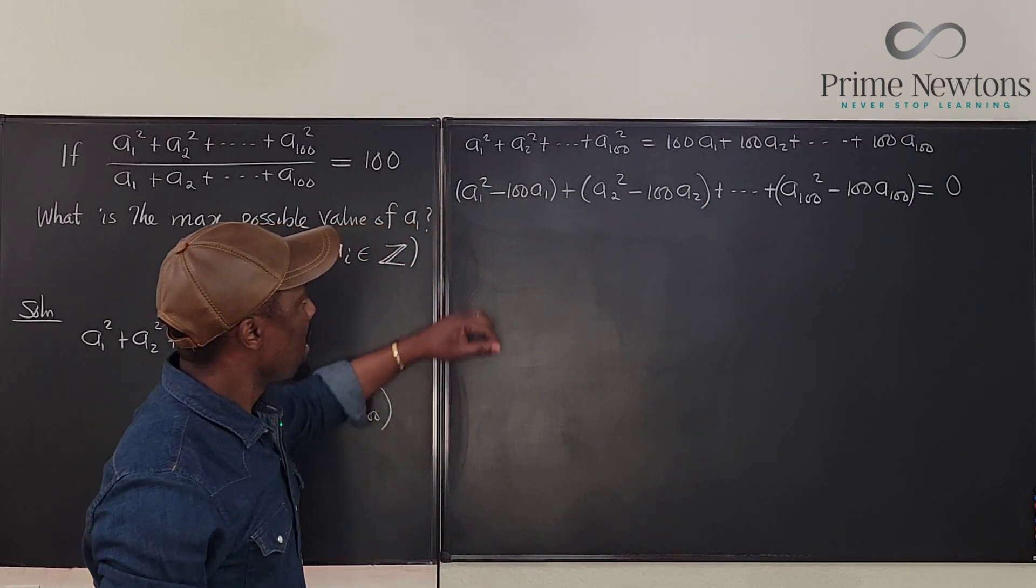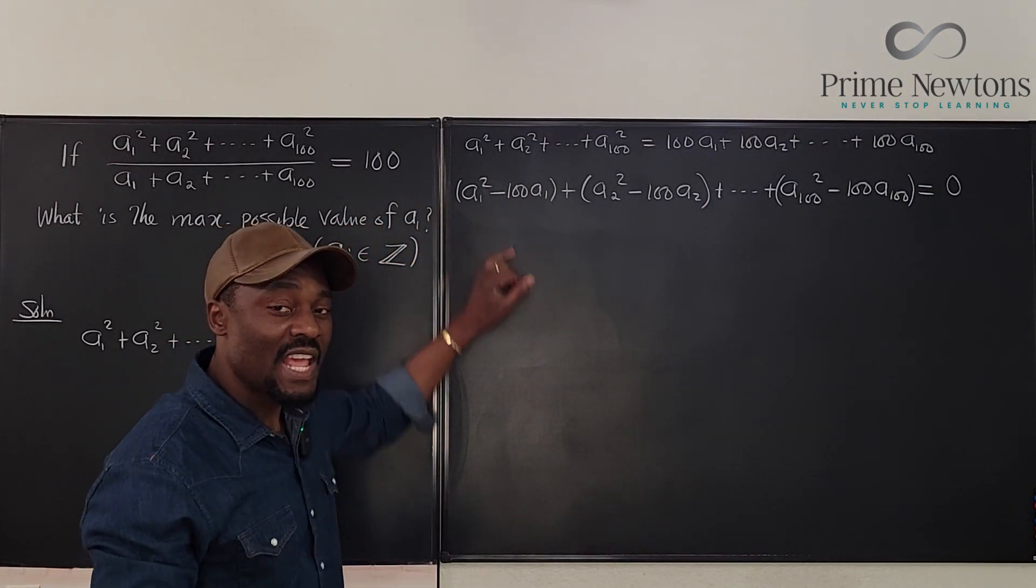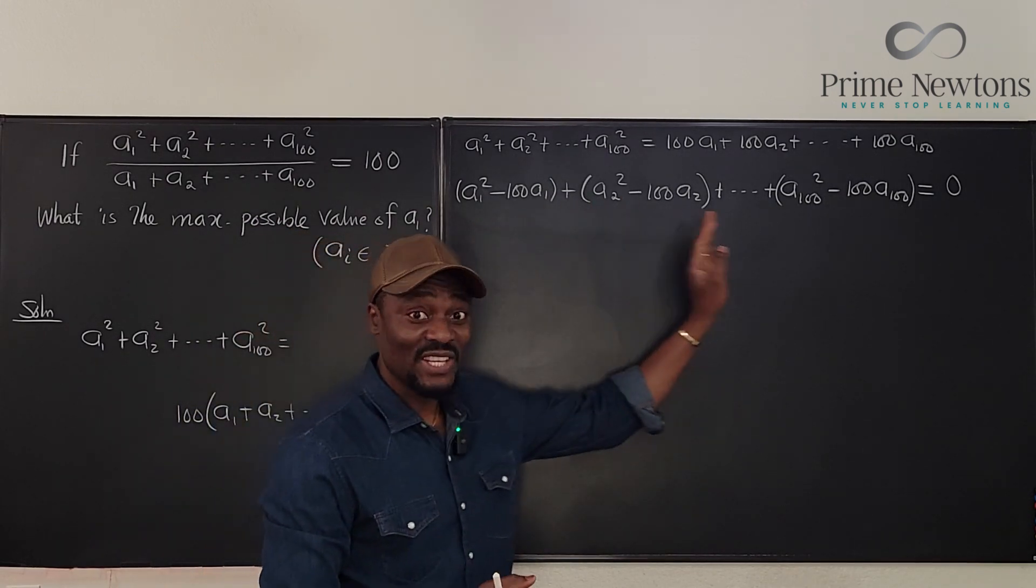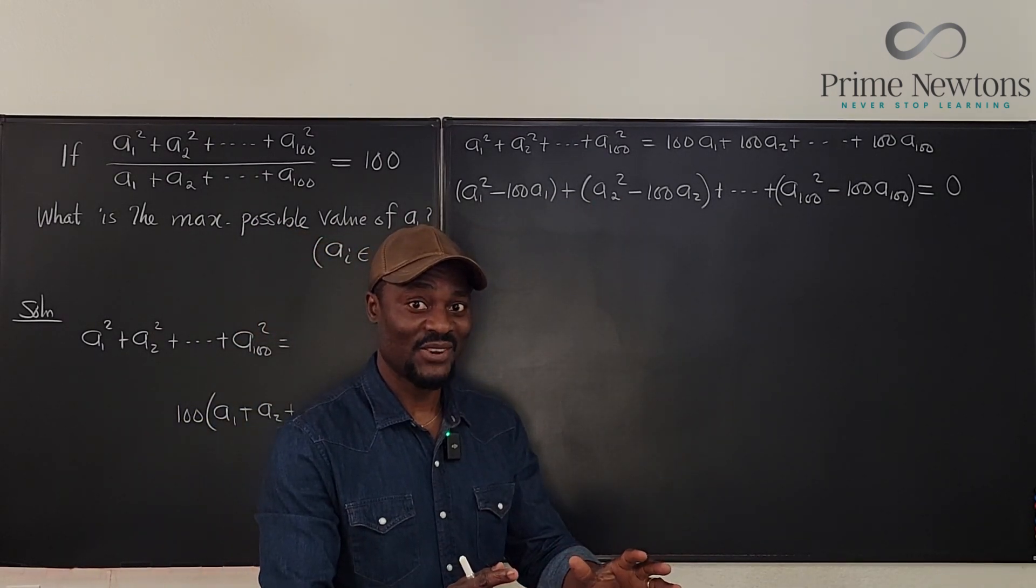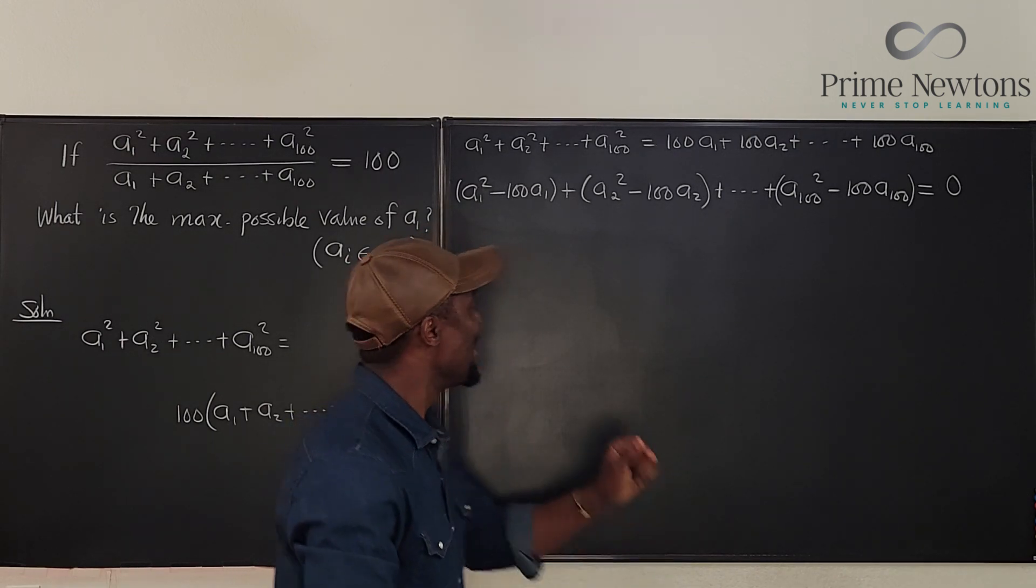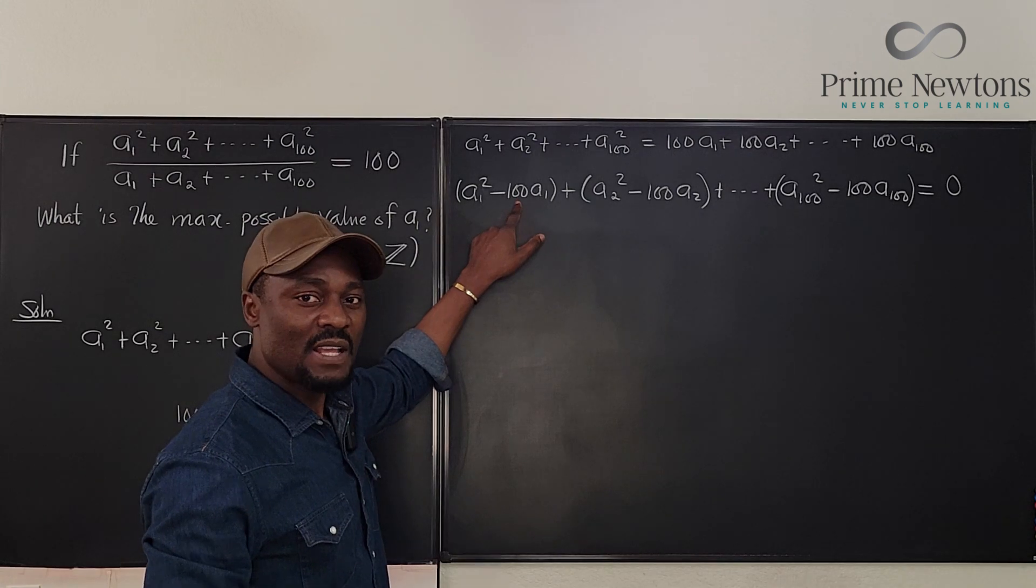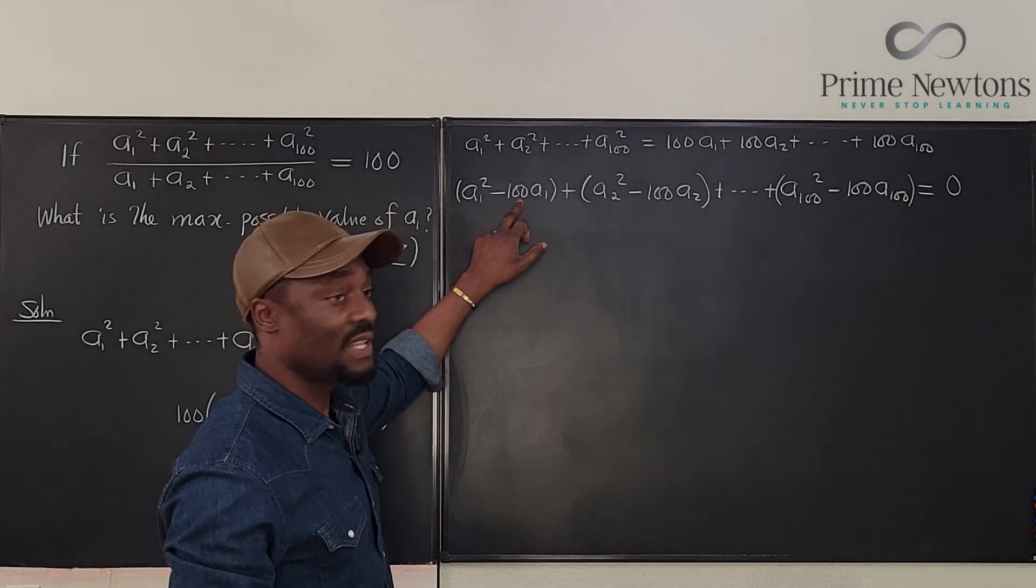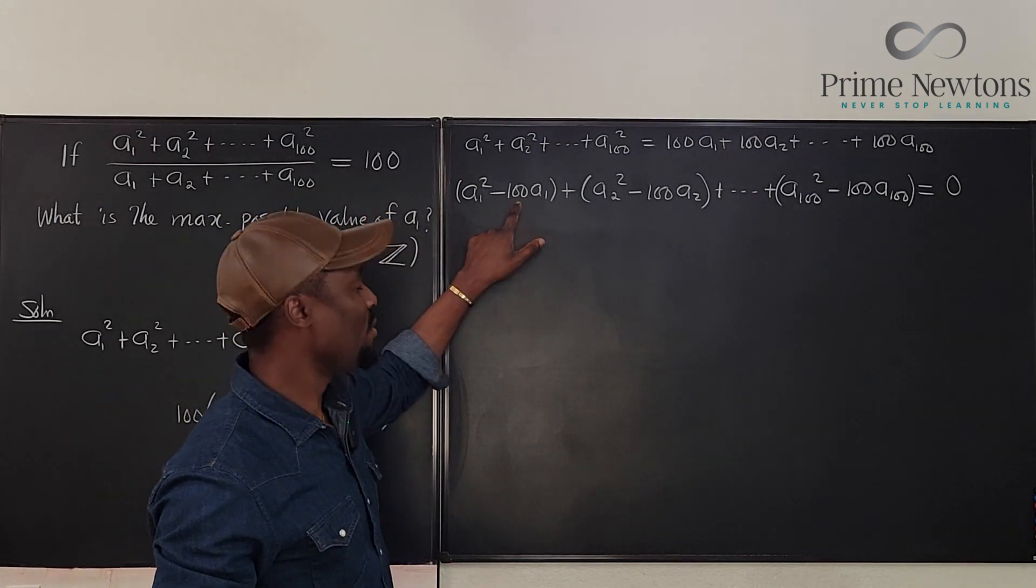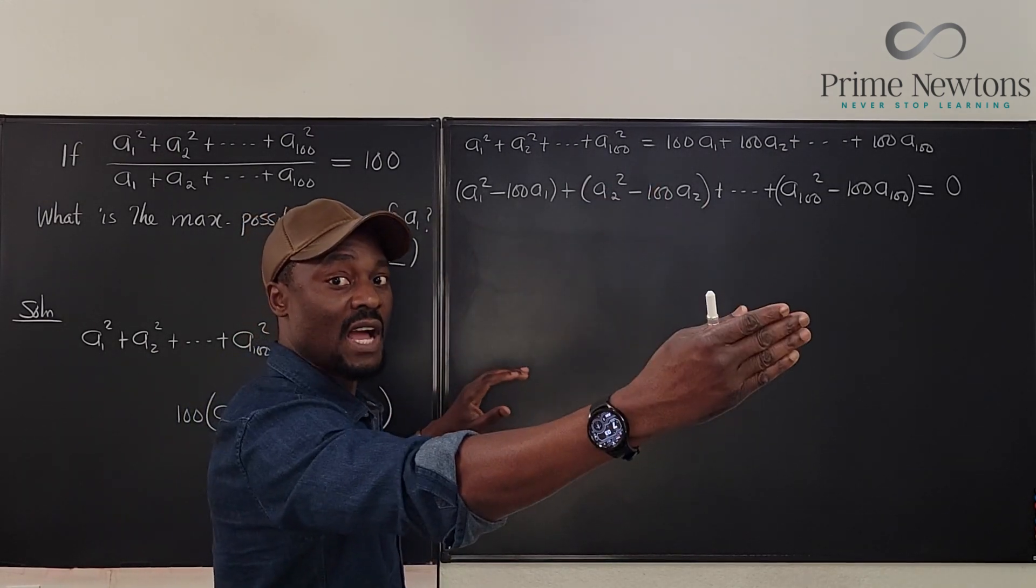Now, if I perform completing the squares on this, why am I doing it? It is to guarantee that everything I'm adding together is positive. That's the good thing about completing the squares. So if I do completing the squares here, remember, it is half of the middle term or half of the linear term here, the coefficient of A. Then you square it, and you add it to both sides.